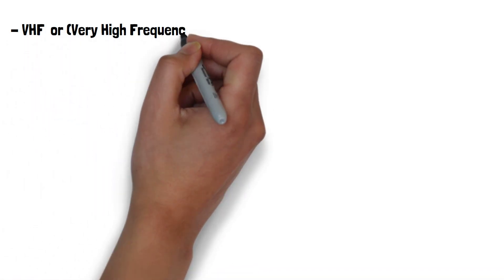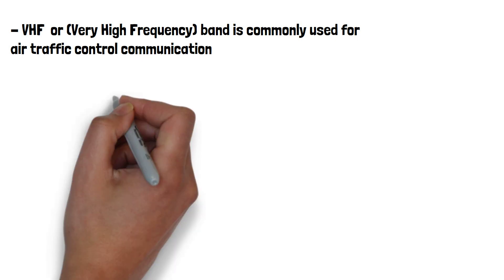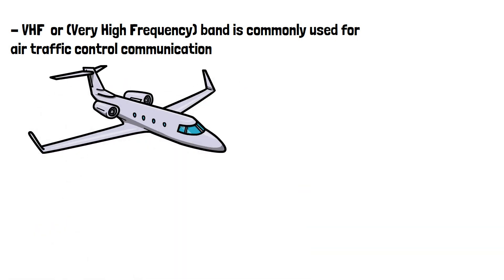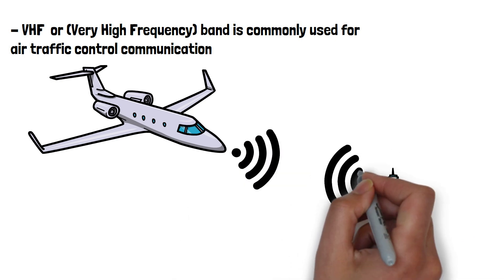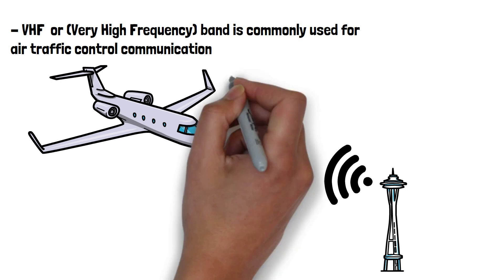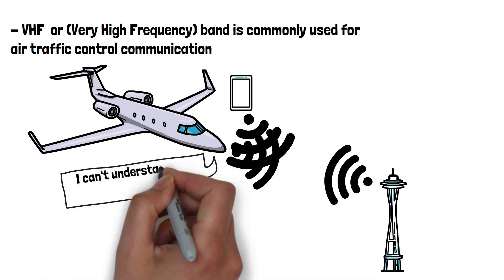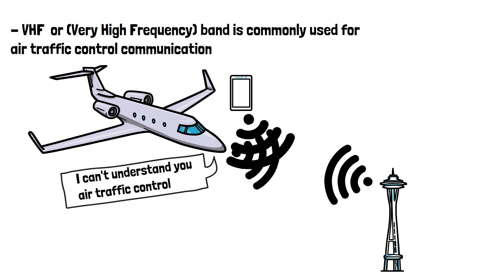The VHF, or very high frequency band, is commonly used for air traffic control communication. Electronic devices including smartphones, tablets, and laptops also utilize various frequency bands for wireless communication such as cellular networks. If a device onboard uses the same frequency band as the aircraft or air traffic control are using, this could cause the pilots to lose contact with air traffic control or hear static or low quality audio when receiving audio from them.